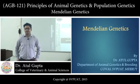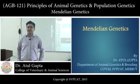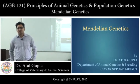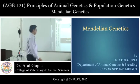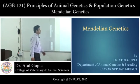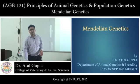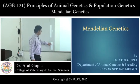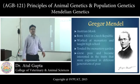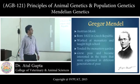In this class we will discuss about Mendelian genetics. Gregor John Mendel — everybody has heard about him — he was an Austrian monk born in 1822 in Czech Republic.